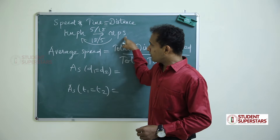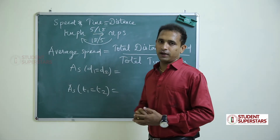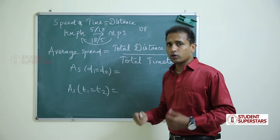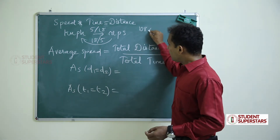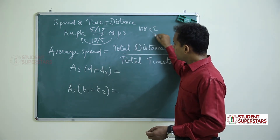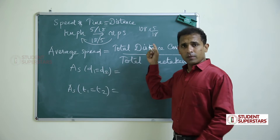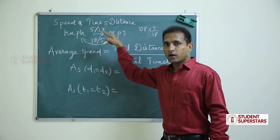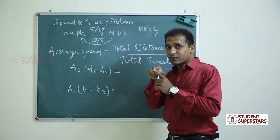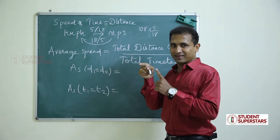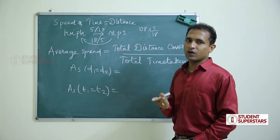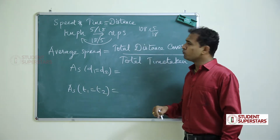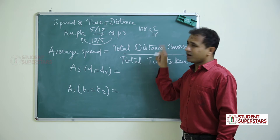To convert kilometer per hour to meter per second, multiply by 5/18. For example, 108 km/h — multiply by 5/18. Why 5/18? Because 1 kilometer = 1000 meters, and 1 hour = 60 × 60 seconds. So the conversion factor works out to 5/18. So 108 × 5/18.